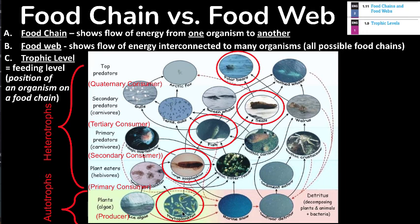Trophic levels can be further identified numerically — the producer level is trophic level one, and we simply count up: one, two, three, four, five. We can count these levels all the way up or identify them by their names: producer, primary consumer, secondary consumer, tertiary consumer, or quaternary consumer.